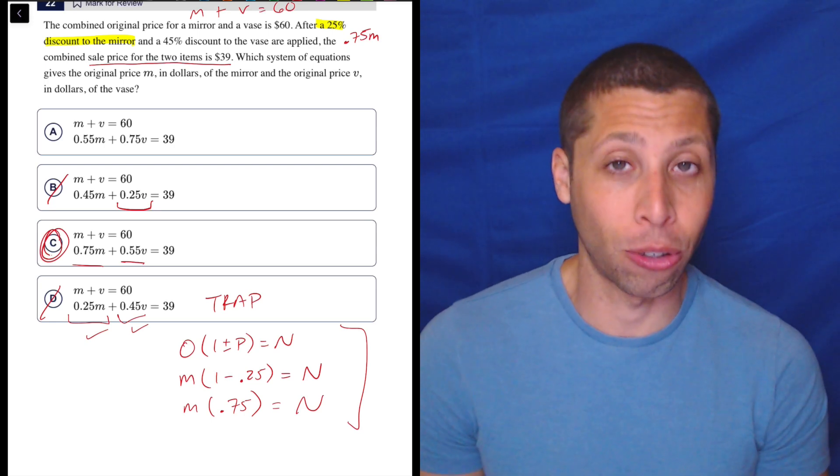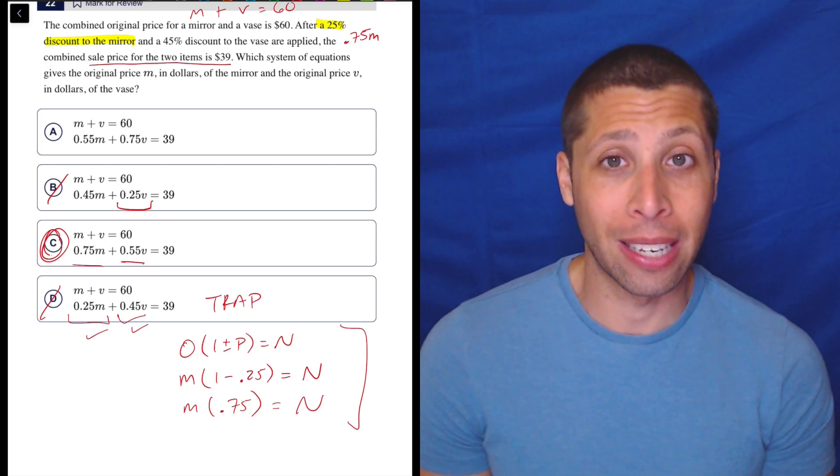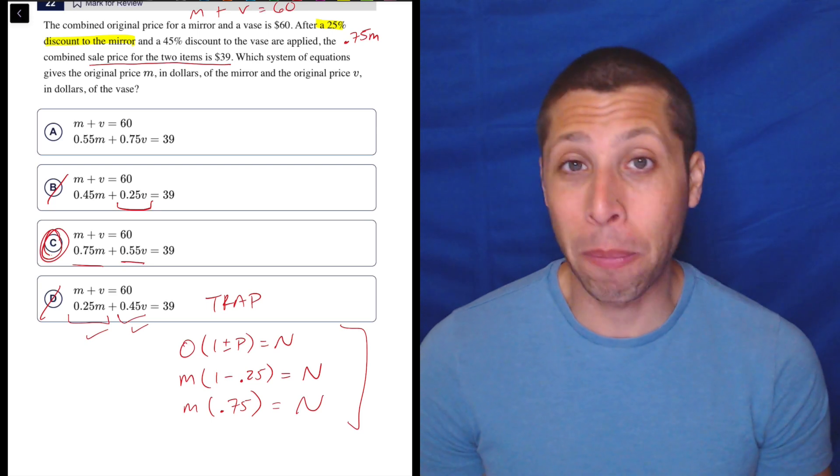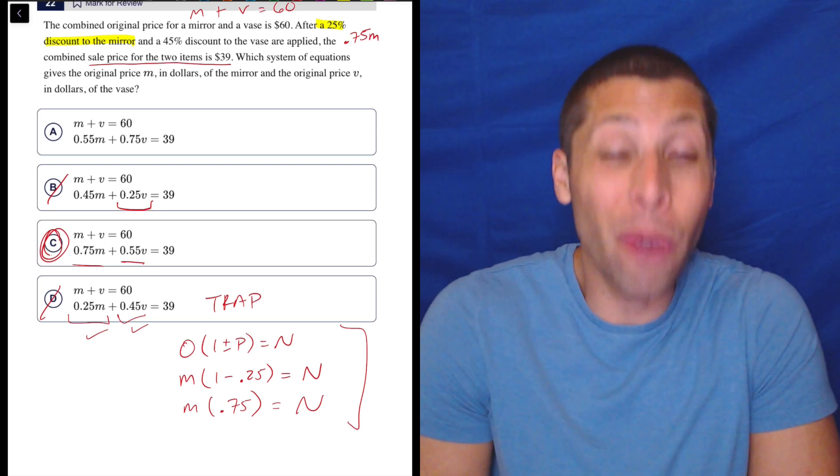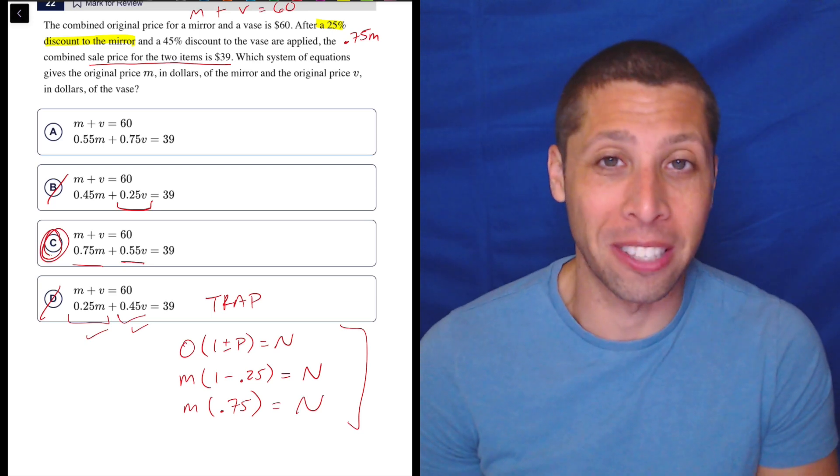So just reread, be careful, think about potential traps, and try to save these points. Because if you can just see past that one percentage issue, this is still a relatively easy question compared to what we would see in a hard module.